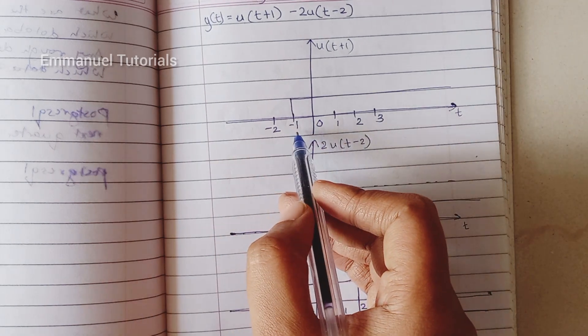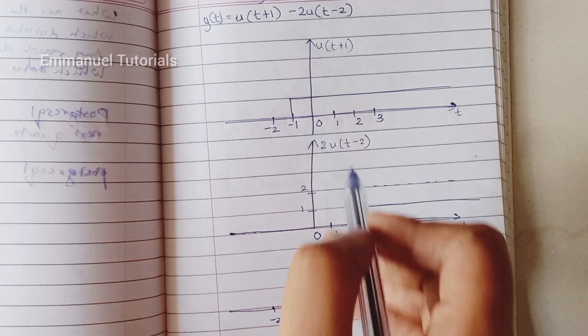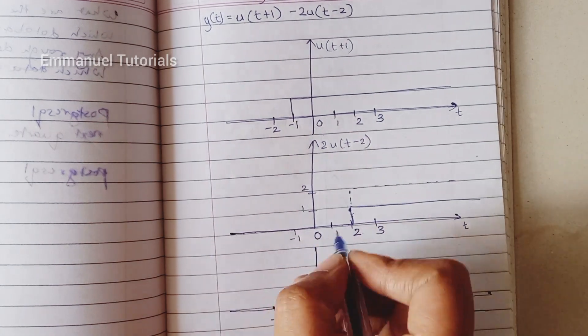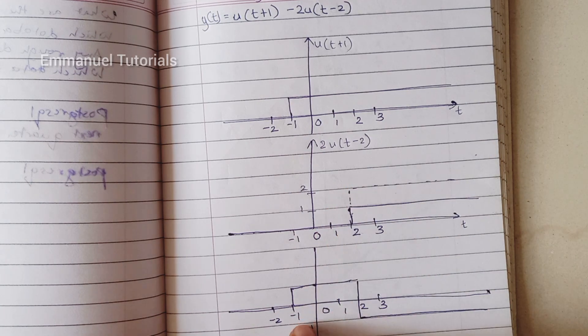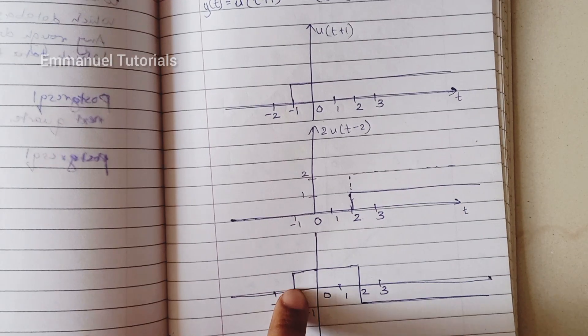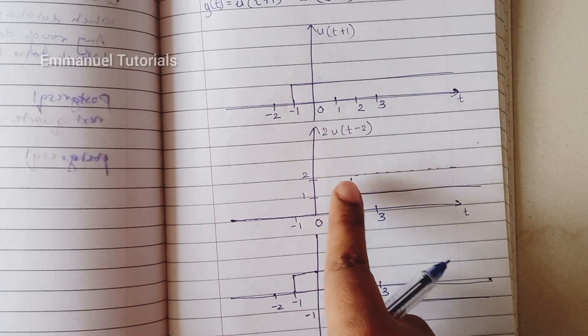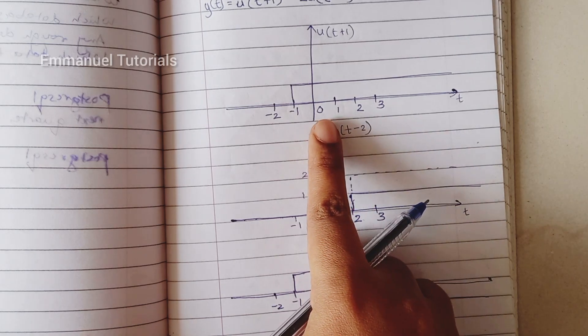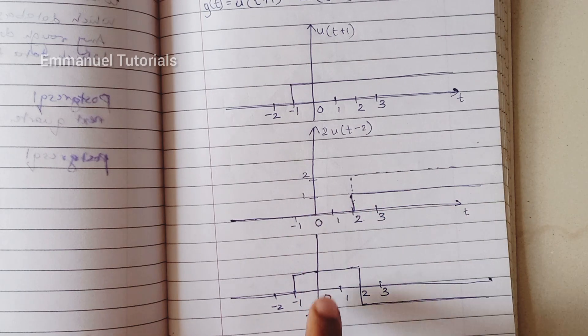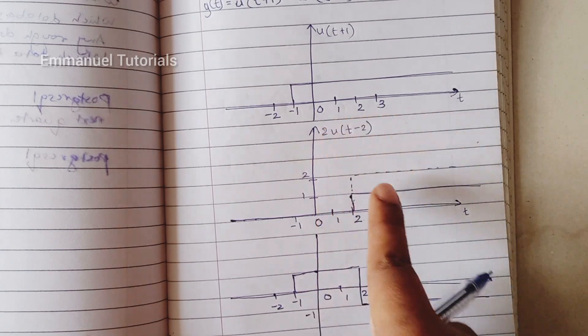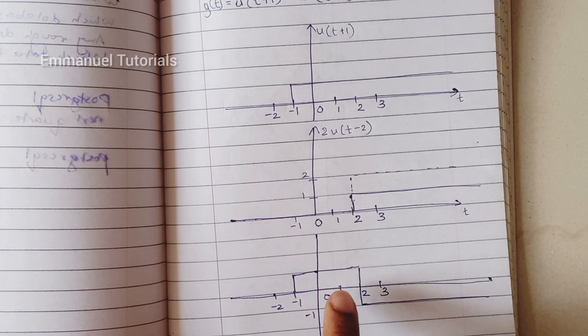So at minus 1, first signal's amplitude is 1, second signal's amplitude is 0. So 1 minus 0 is 1. So that is what I have drawn here. At 0, first signal's amplitude is 1, second signal's amplitude is 0. So again 1 minus 0 is 1. Similarly at 1, 1 minus 0 is 1.